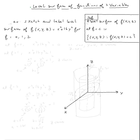The topic is level surfaces of functions of three variables. Example: sketch and label level surfaces of f(x, y, z) = x² + 16y² for f = 0, 1, 2.